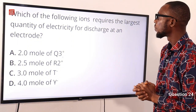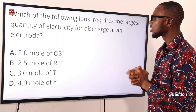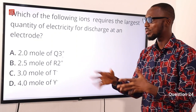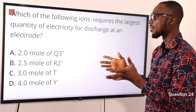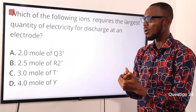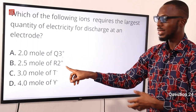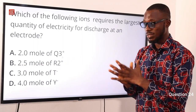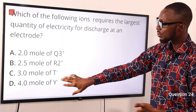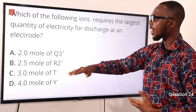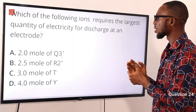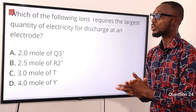Question 24: Which of the following ions requires the largest quantity of electricity for discharge at an electrode? A univalent ion requires 96500 × 1. A trivalent ion with 2 moles gives 96500 × 3 × 2, that is a factor of 6. Comparing all options: one gives 6, another 5, another 4, another 3. The largest is 6, so option A is the correct option.